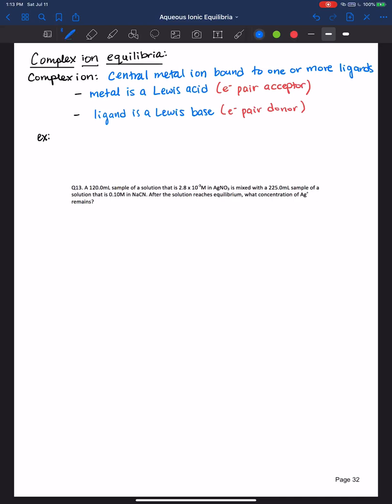So an example would be the silver cation plus ammonia to make this complex ion. And so the cation is the Lewis acid. It will accept electron pairs from the ammonia, which is a Lewis base. Remember, ammonia's Lewis dot structure has lone pairs on the nitrogen. So they make for good Lewis bases.